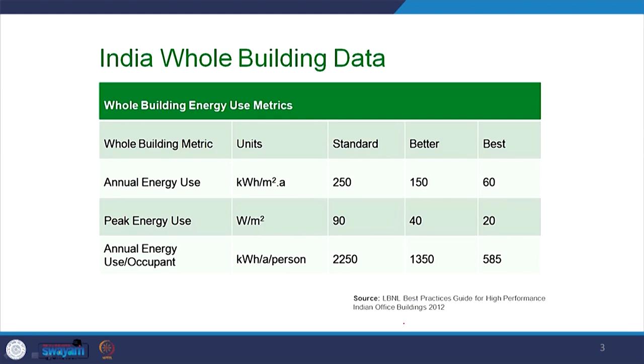If we look at the current data for energy consumption in buildings published by LBNL in 2012, the standard annual energy use — the EPI — for Indian air-conditioned buildings is around 250 kilowatt-hour per meter square per annum, and the best is around 60. On an average, many buildings in India do not use air conditioning and have an annual EPI of around 100.